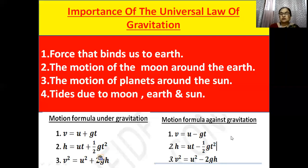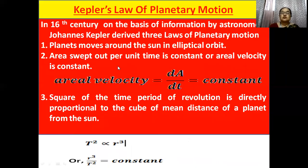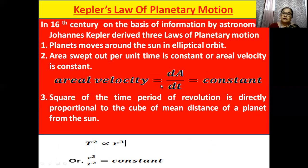After that, the third topic is Kepler's laws. Kepler's laws are three laws given in the 16th century. Based on astronomical observations, Johannes Kepler derived three laws of planetary motion: planets move in elliptical paths, the area swept per unit time is constant (aerial velocity), and the third law relates the period of revolution. We will explain this in the next class. Have a nice day!